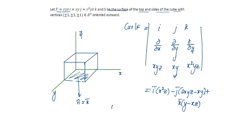And n cap is given as k bar. So curl F dot n cap will be only the k component, that is y minus xz. On taking z equal to 0, it converts into only the xy plane.